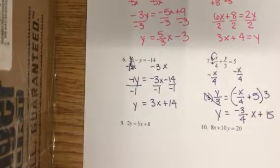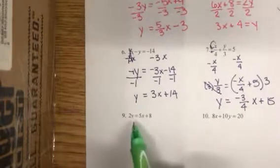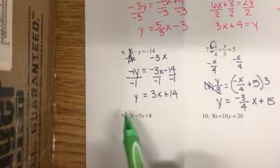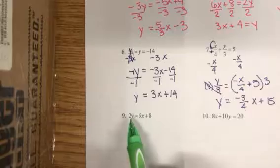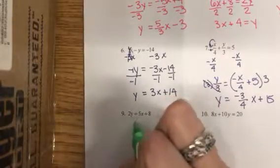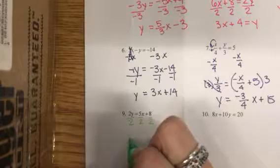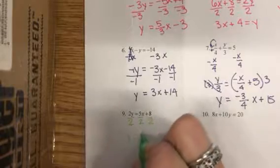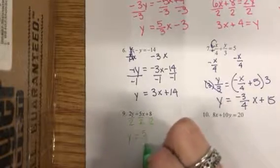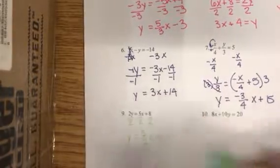Number nine: there's nothing else sitting with the y except this 2, so we'll undo multiplication with division, giving us y equals five over two x plus 4.